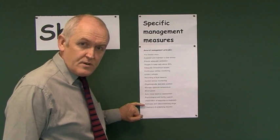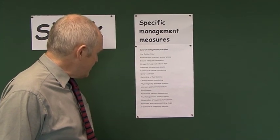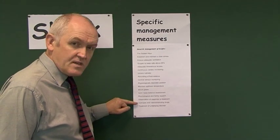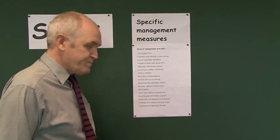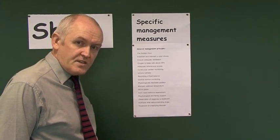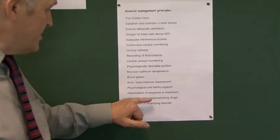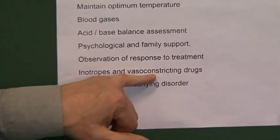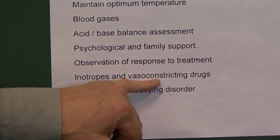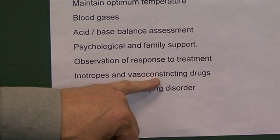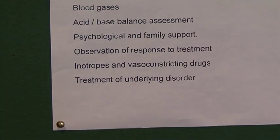Inotropes and vasoconstricting drugs may be necessary. An inotrope is a drug which increases the force of cardiac contraction, and a vasoconstricting drug causes peripheral vasoconstriction. Both increasing the force of cardiac contraction and causing peripheral vasoconstriction will lead to an increase or maintenance of blood pressure.